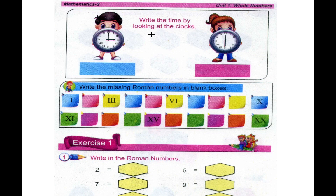Write the time by looking at the clock. Look at the clock — the time we have to write in Roman numbers. We have triple I, which is 3. And this is X double I, which is XII — that is 12. So the hour hand is at 3 and the minute hand is at 12. So the time here is 3 o'clock. We write triple I.